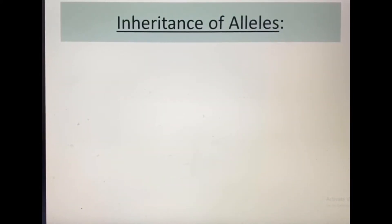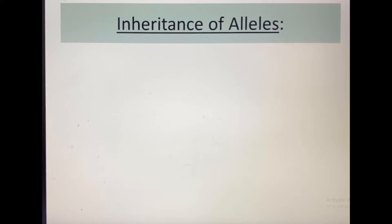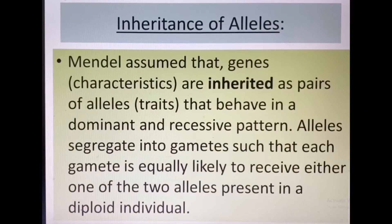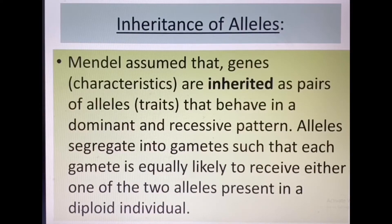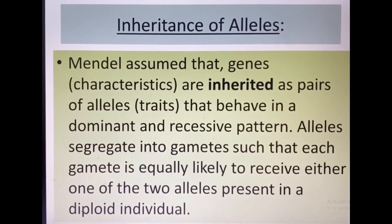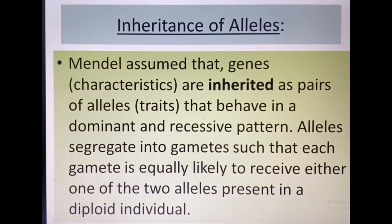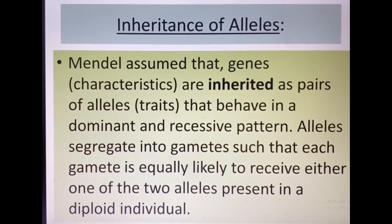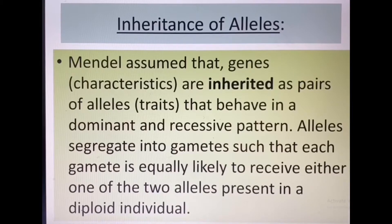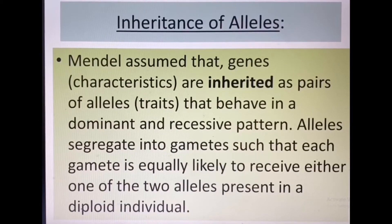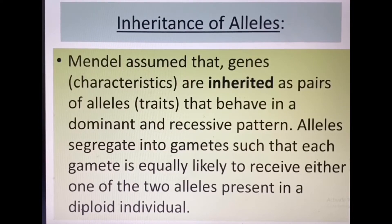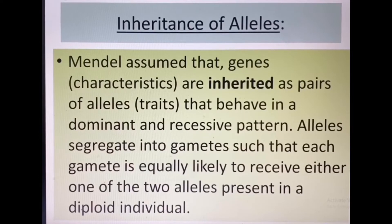Before getting started, we need to know some basics about the inheritance of alleles. You already got to know about alleles, which are the specific genes found in specific locations of chromosomes, especially on the paired chromosomes. Mendel assumed that genes or characteristics are inherited as pairs of alleles. Alleles are the traits that behave in a dominant and recessive pattern. Alleles segregate into gametes such that each gamete is equally likely to receive either one of the two alleles present in a diploid individual.